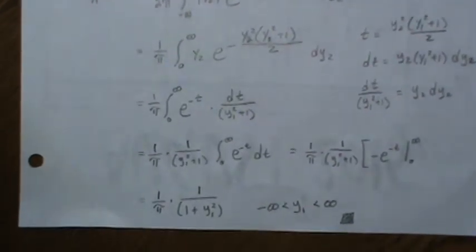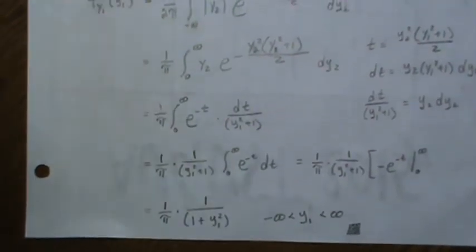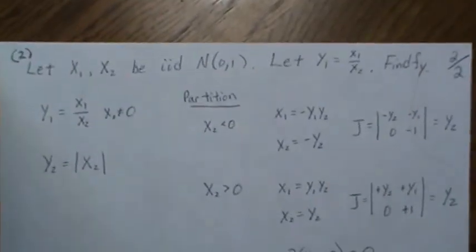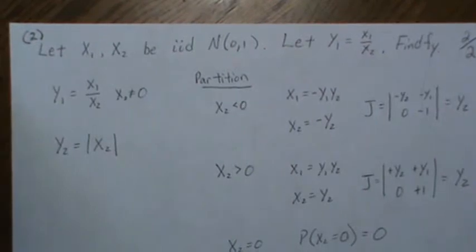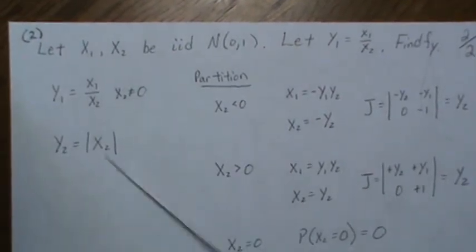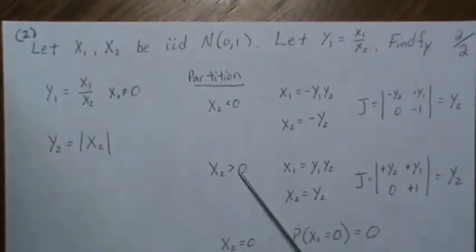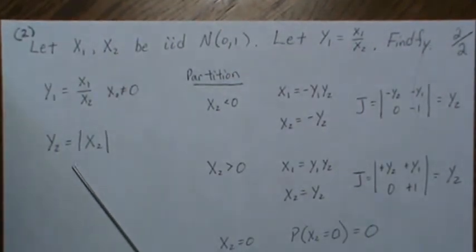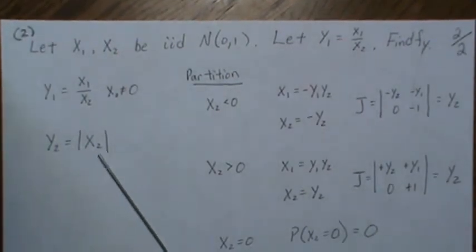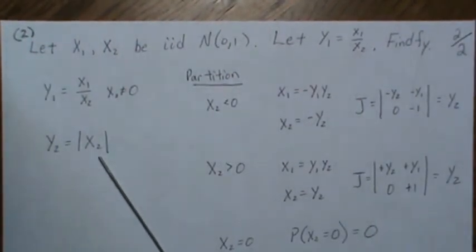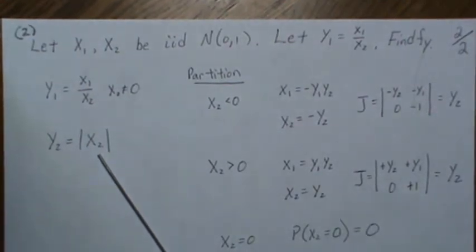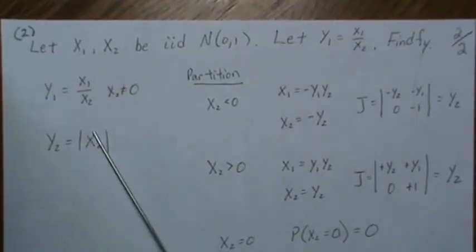Okay, so now let's do it another way, and we should come up the same because we're interested in this ratio, so we should get a Cauchy. In this case, we're going to let Y2 be the absolute value of X2.